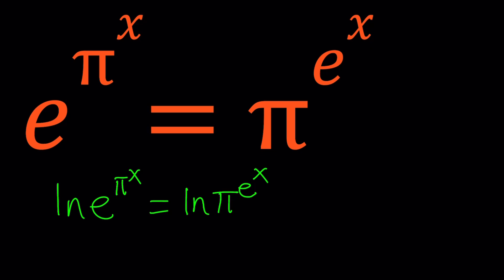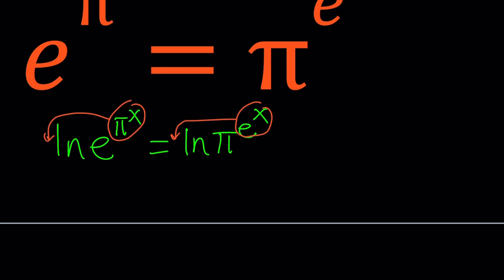Let's use properties of exponents. We're going to bring this to the front and we're going to bring this to the front. When you bring those down, you're going to get pi to the power x times ln e equals e to the power x times ln pi.